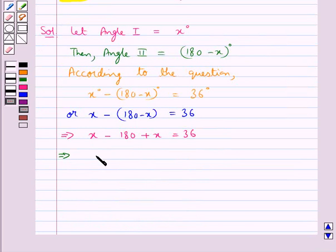This further gives us 2x = 180 + 36, so we have 2x = 216.